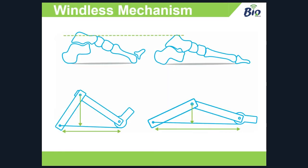This image shows how the windlass actually works in engineering terms. If you think about the hallux as being like a lever and the joint as a pulley system, as you dorsiflex the hallux or lift up the lever, that pulls on the plantar aponeurosis, pulls the heel and the first MPJ closer together, which then raises the arch. Quite a few of the old theories talk about the arch locking — we'll look at that later — but it has more to do with the arch stiffening up.